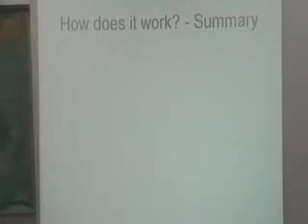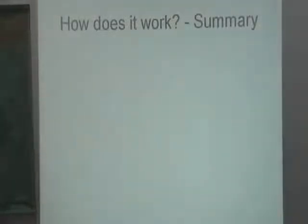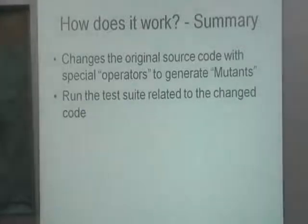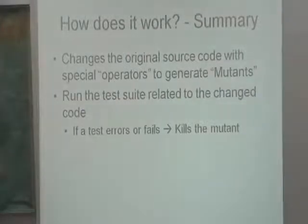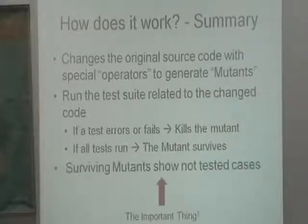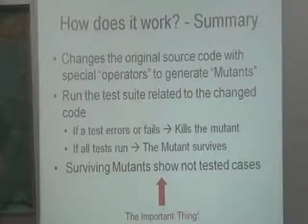Would you say fail or error? Either fail or error. Sometimes the tests don't end because of the change made to the source code, so you have to terminate the mutant. In summary, it's very simple: you take the source code, for each method you apply the operators, create mutants, run all your tests per mutant. If the test errors or fails, the mutant is dead. If all tests pass, the mutant survives. You have to look for mutants that survive, because they could represent cases you're not testing.